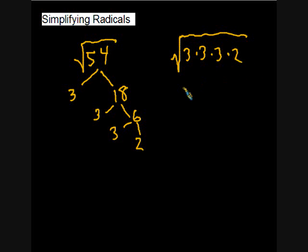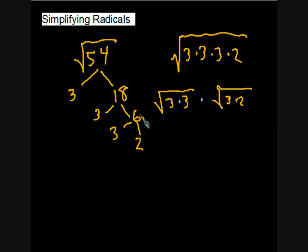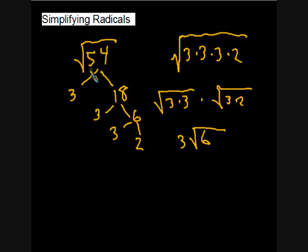Breaking it apart using the product property, pairing factors where possible: square root of three times three equals three, and we're left with the square root of six. So three times the square root of six equals the square root of fifty-four. You can check this on your calculator — compute the decimal of square root of fifty-four, then compute three times square root of six, and you'll see they are the same.